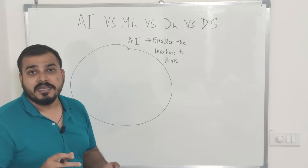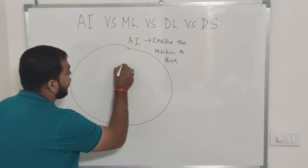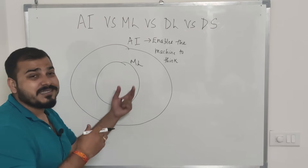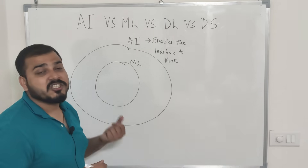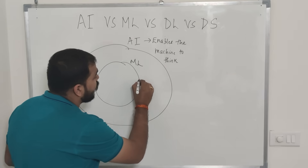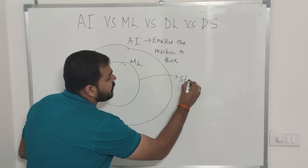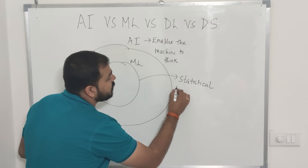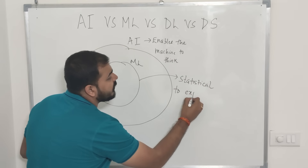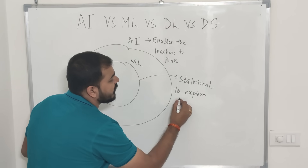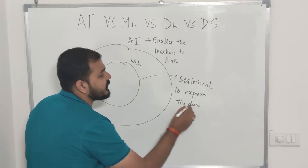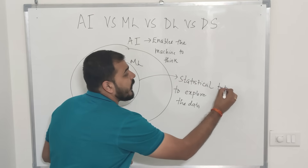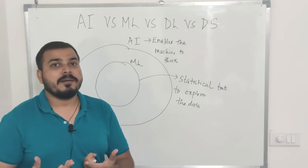Now when I talk about machine learning, machine learning is a subset of AI. What does machine learning help us to do? It provides us statistical tools to explore and understand that particular data.